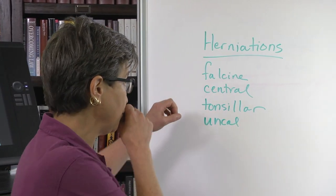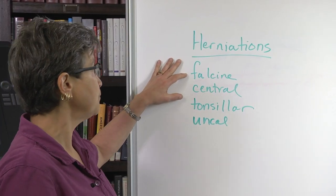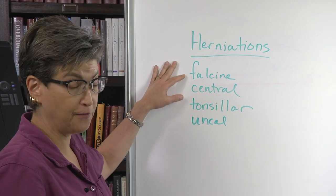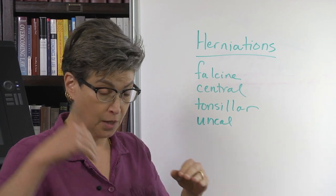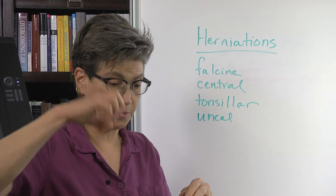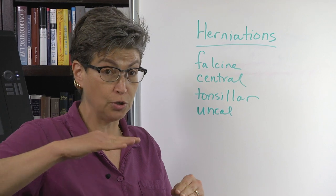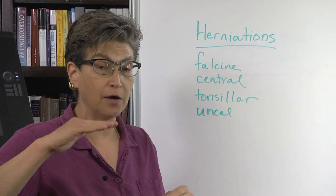The four types of herniations: the first one I'll tell you about is the falcine, and that means a herniation under the falx. For example, the lowest part of the cerebral hemisphere of the cortex is the cingulate gyrus, so if that cingulate gyrus slips underneath the falx, that would be a falcine herniation.